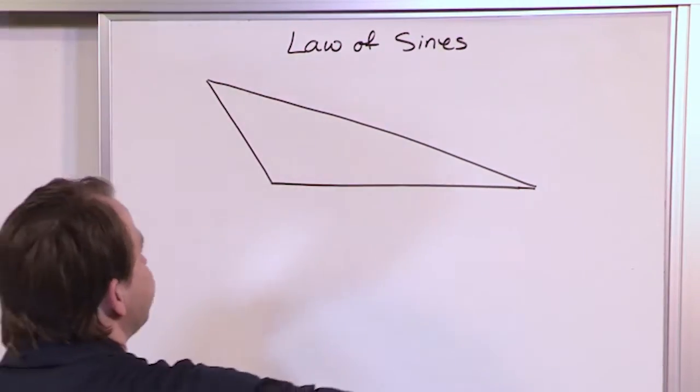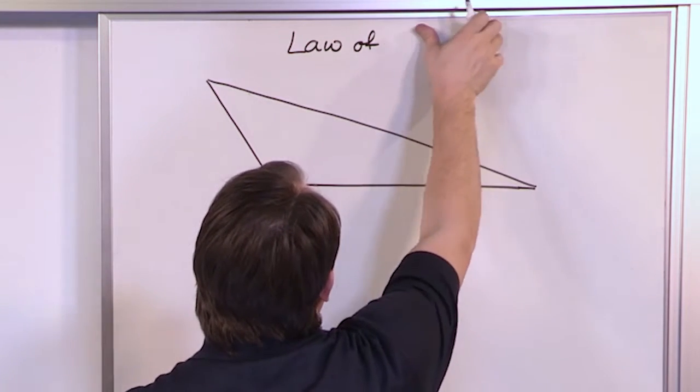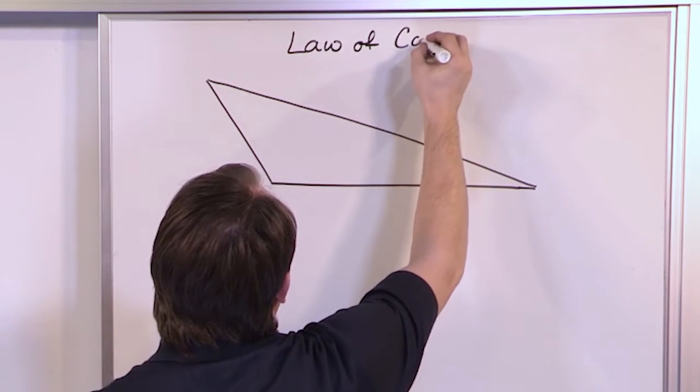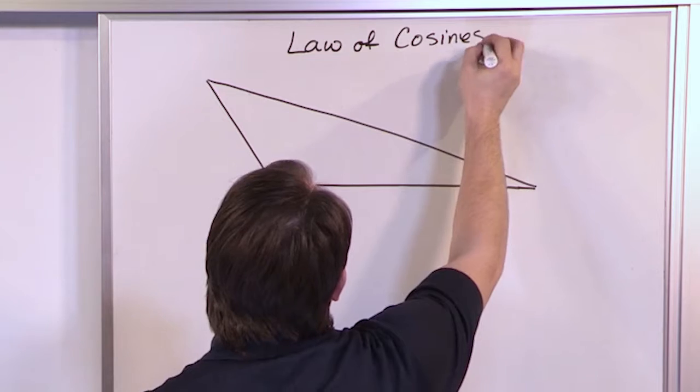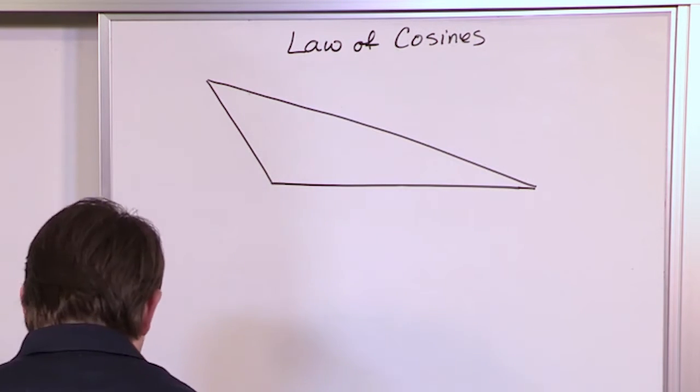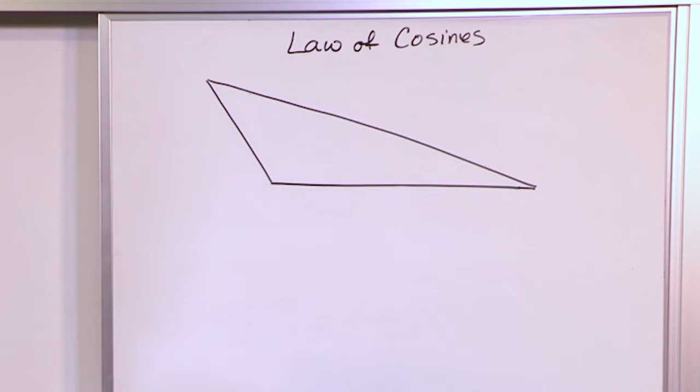So for law of cosines, let me go ahead and draw a picture to show you what this is. So this is law of cosines here. So I have the same kind of triangle, just showing you it's all different shapes and sizes of triangles.